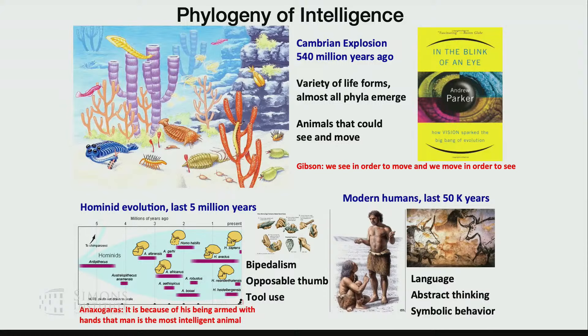Natural intelligence is a biological construct and everything in biology only makes sense in the context of evolution. The beginnings of intelligence are like 540 million years ago in the Cambrian explosion, which is when you have the first multicellular animals — these animals could see and they could move. These two abilities go together because the ability to move means that you can get food in different places, but then you need to know where to go, which means you need some form of perception. So this is a loop: perception and motion together.